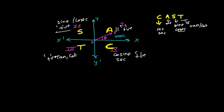So keep in mind: in the first quadrant all trigonometric ratios are positive; in the second quadrant sine and cosecant are positive; in the third quadrant tangent and cotangent are positive; and in the fourth quadrant cosine and secant are positive. To remember this we use the CAST rule — a very good rule.